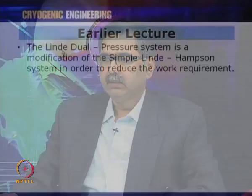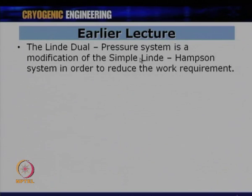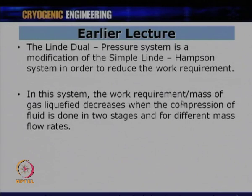Then we went for the Linde dual pressure system wherein we used two compressors. It is a modification of the simple Linde-Hampson system to reduce the work requirement. The work requirement per mass of gas liquefied decreases when compression is done in two stages with different mass flow rates. Both compressors had different flow rates, with the total amount M getting compressed only in the second compressor.